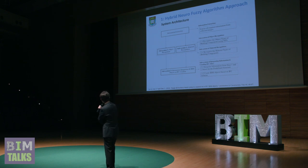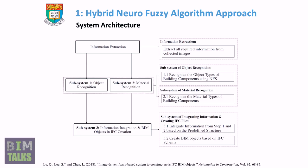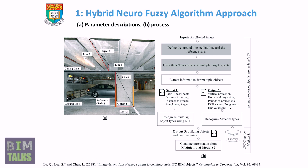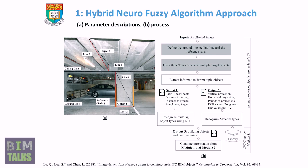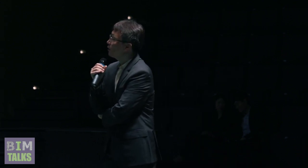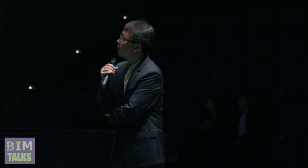This is the simple system architecture: collect information from images, then recognize objects, recognize their materials, combine these, and create an IFC BIM model. When I started this research, we had some difficulties fully automating the process, so we started with a semi-automated approach. For example, taking a picture, we can easily see columns, beams, slabs, floors, etc. We tried to identify the key features needed and determined the necessary information to create the model and automate other processes.